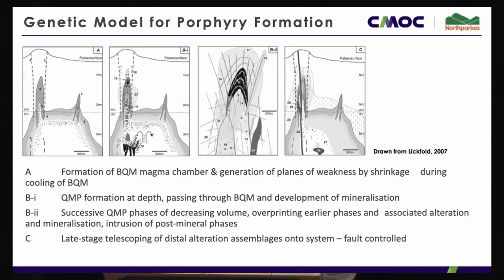A genetic model developed by Vanessa Lickfold shows emplacement of the magma chamber into the shallow crust; as it cools — like bread out of an oven shrinking away from the edge of the tin — it loses volume and generates fracture planes that allow ascent of later porphyritic magmas. These develop a pipe-like geometry with a hard carapace, which is tapped through seismic or structural events or further cooling and fluid loss, allowing volatile exsolution, overpressure, and expulsion of copper, gold and vein gangue material. Each successive porphyry phase contributes metal, redistributes what was already there, and overprints earlier alteration and mineralisation.